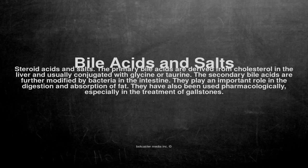Bile acids and salts are steroid acids and salts. The primary bile acids are derived from cholesterol in the liver and are usually conjugated with glycine or taurine. The secondary bile acids are further modified by bacteria in the intestine.